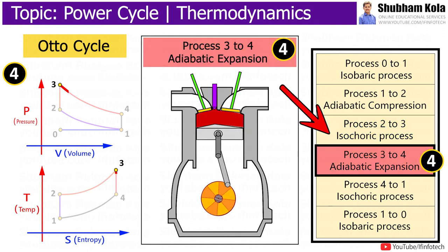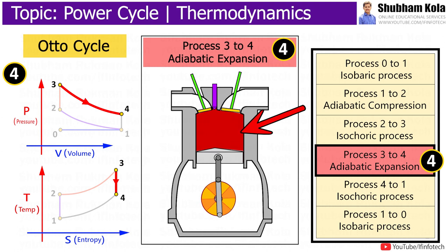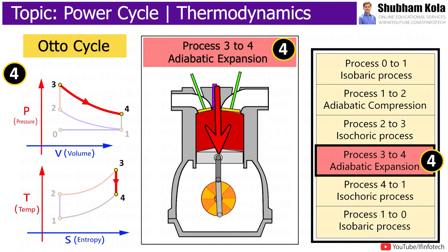Process 3 to 4 is an adiabatic expansion process, where the thermal energy in the combustion chamber is used to do work on the piston, pushing the piston down and increasing the volume of the chamber. This is known as the power stroke, where thermal energy is converted into motion to power the vehicle.